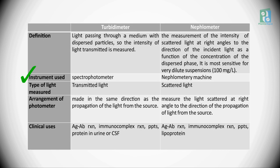Another difference is the type of light which is measured. In a turbidometer, it is transmitted light, and in a nephelometer it is scattered light. The difference regarding the arrangement of the photometer: in the case of a turbidometer, it is placed in the same direction as the propagation of light from the source. In a nephelometer, it measures the light scatter at a right angle to the direction of propagation of light from the source.